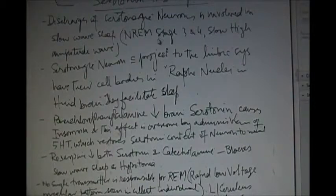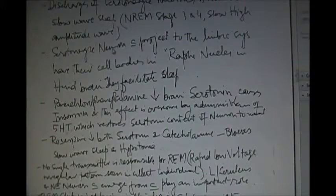The discharges of the serotonin neuron is involved in slow wave sleep. In NREM sleep is stage three and four which is a slow high amplitude wave. It is absent in REM sleep. Serotonin neurons that project through the limbic system have their cell bodies in the raphe nuclei in hindbrain and they facilitate the sleep.